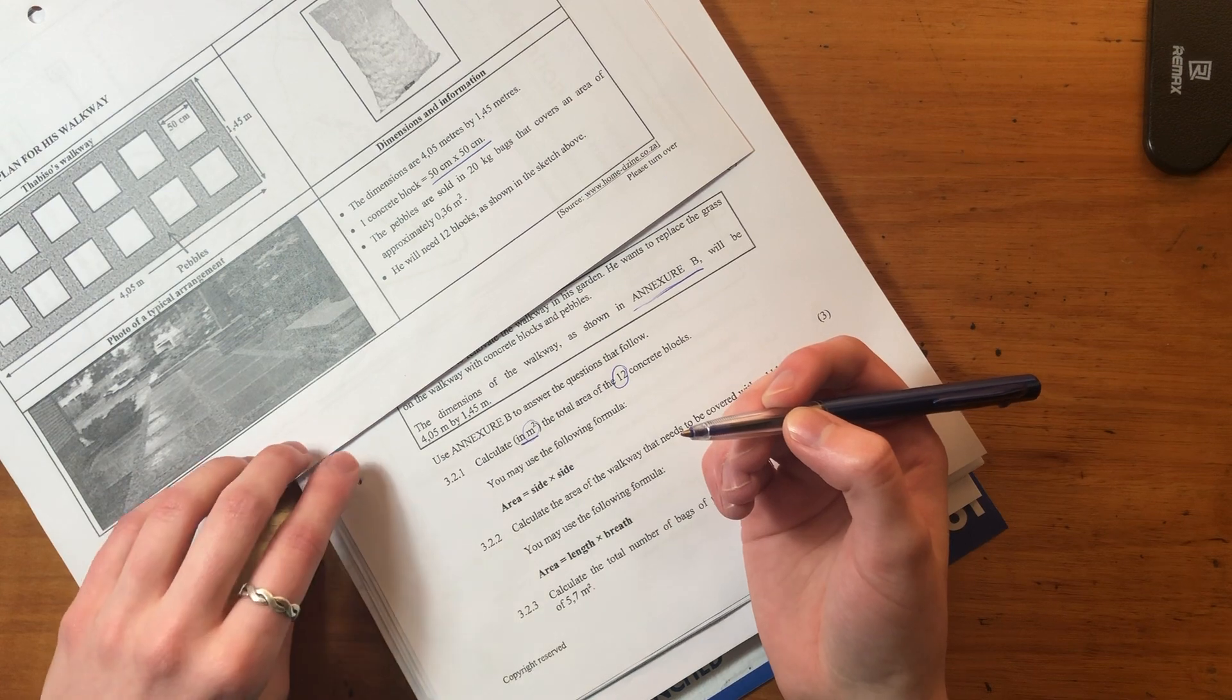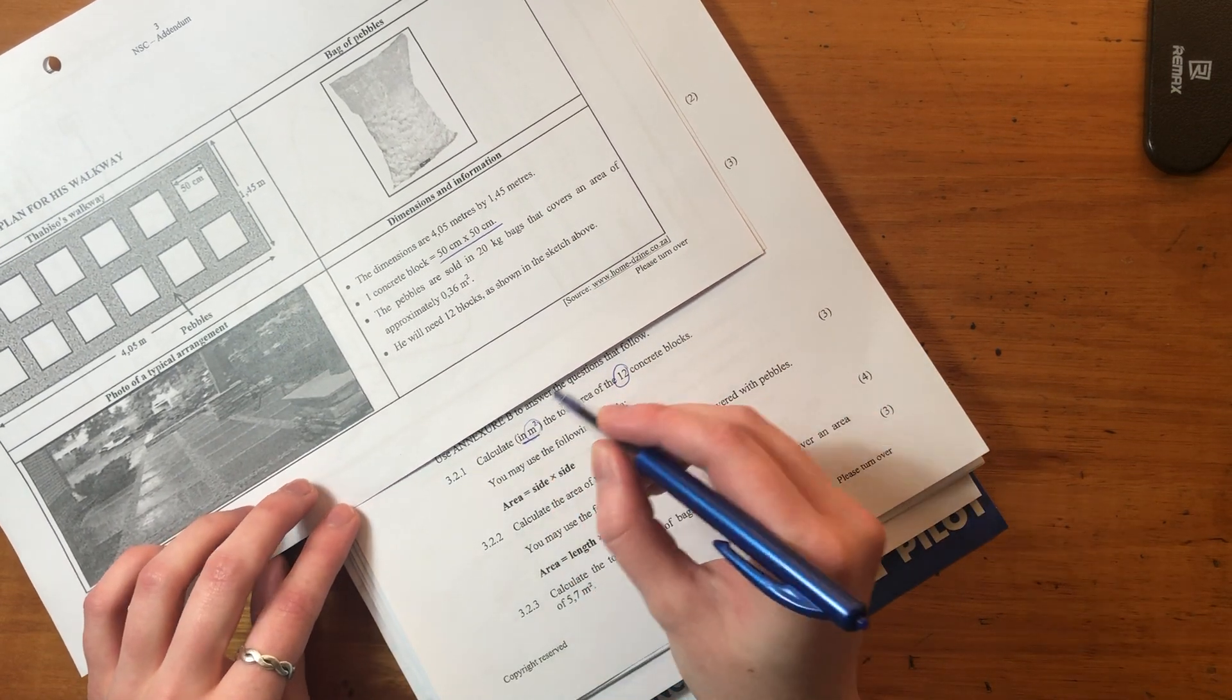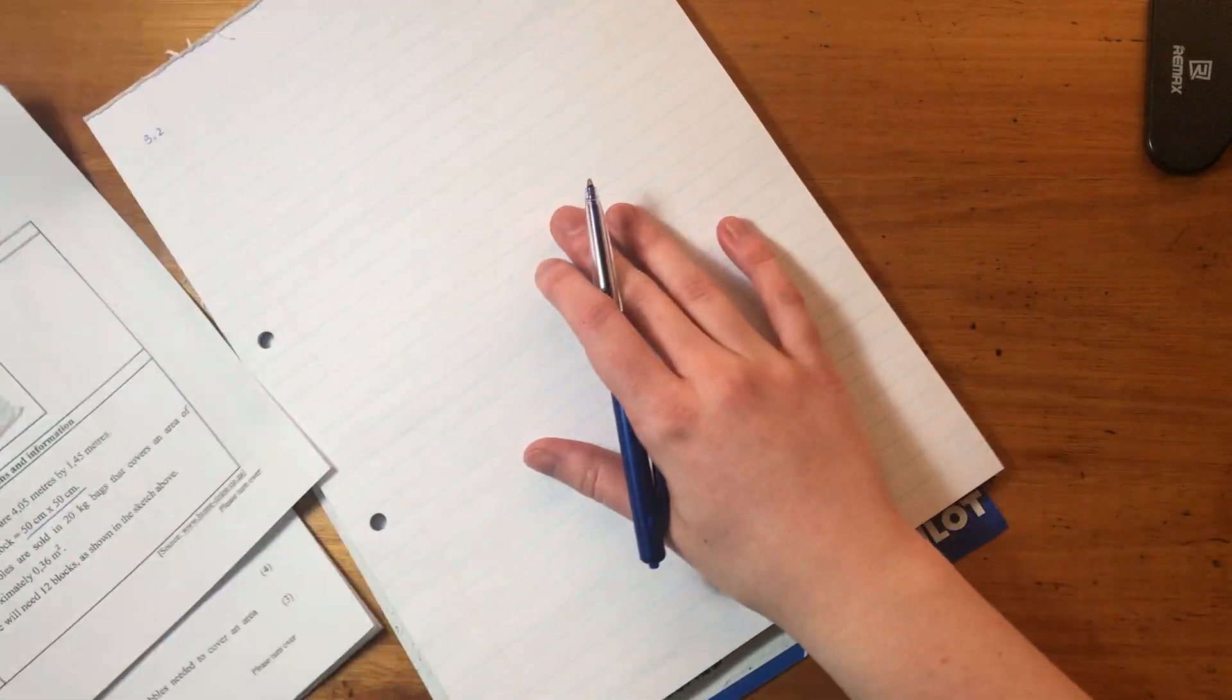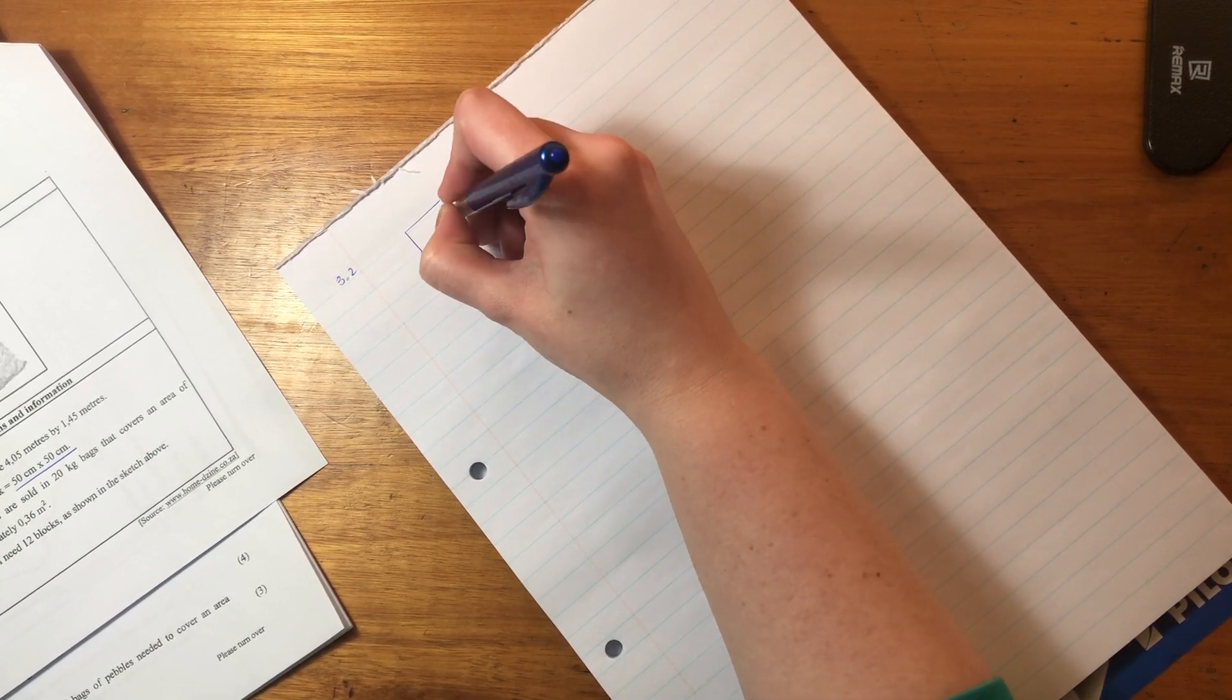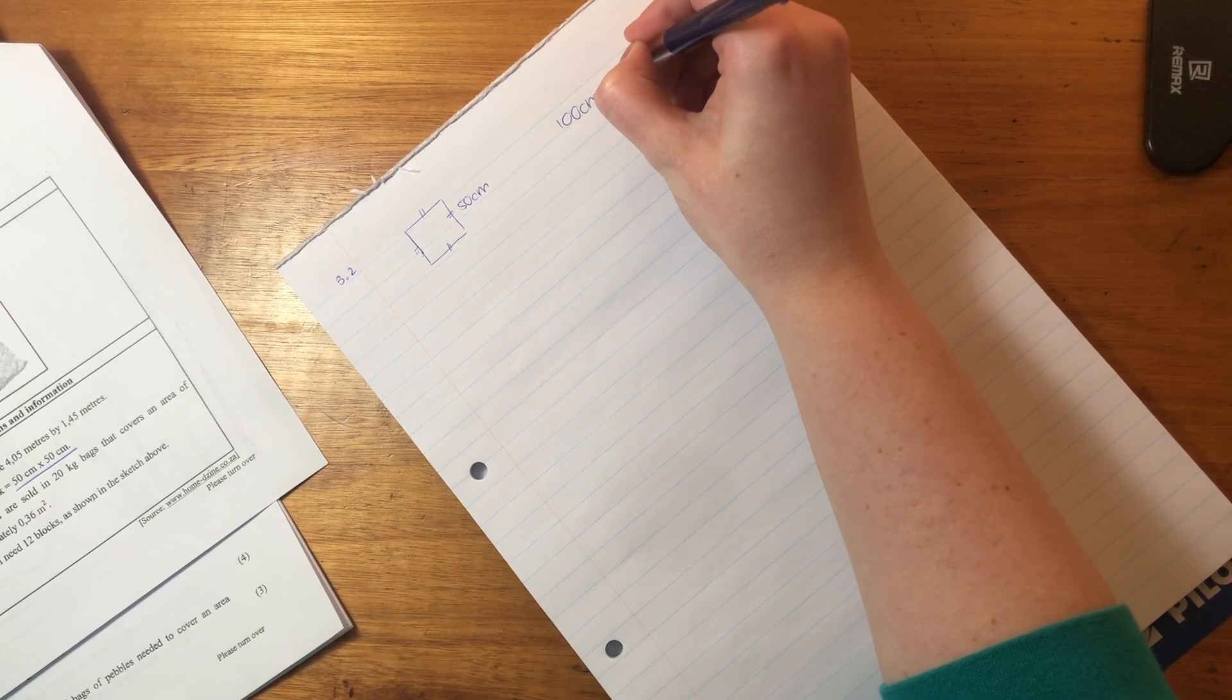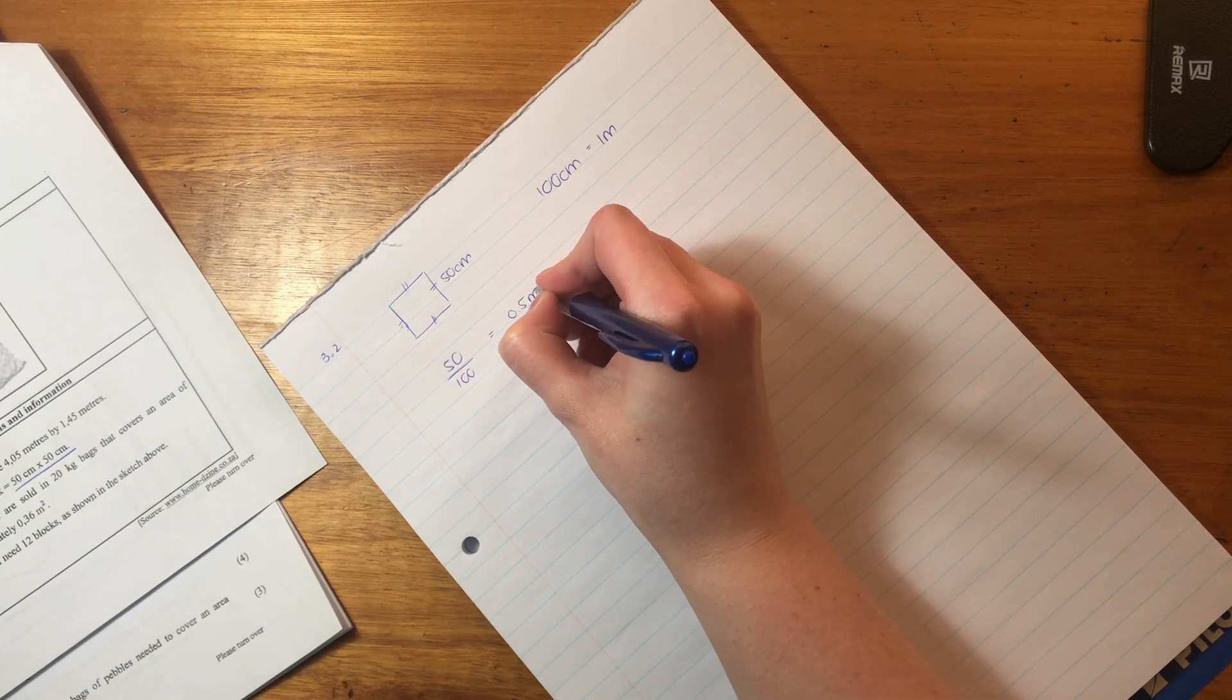It's important to look at, they want it in meters squared. So we're going to have to convert this 50 centimeters, both of those 50 centimeters into meters. Also, what's important is it's meters squared, meters to the power of two, because there are two dimensions - there's length and breadth. So let's just quickly do that question.